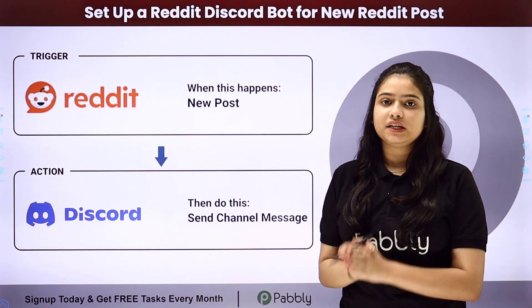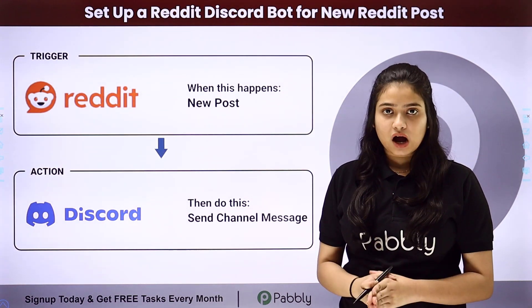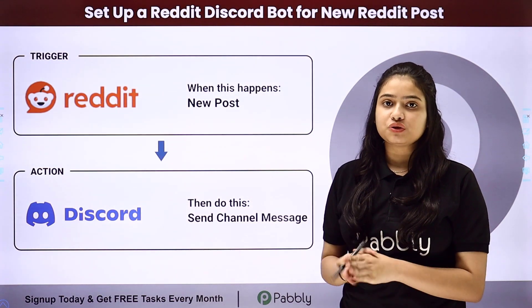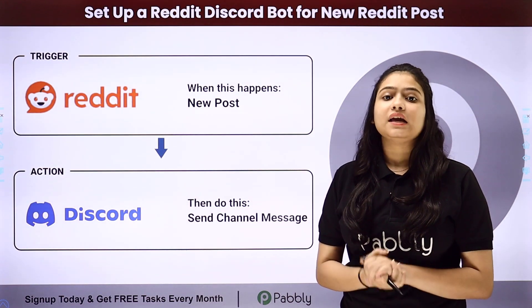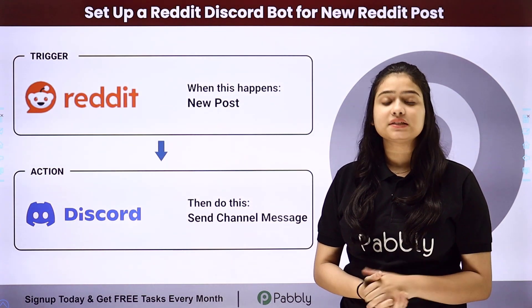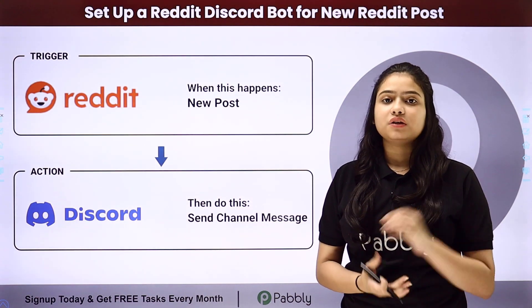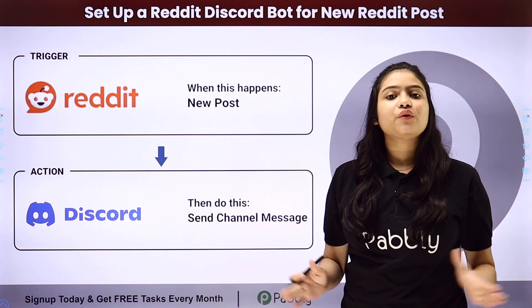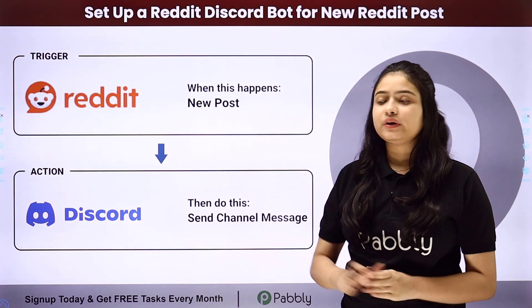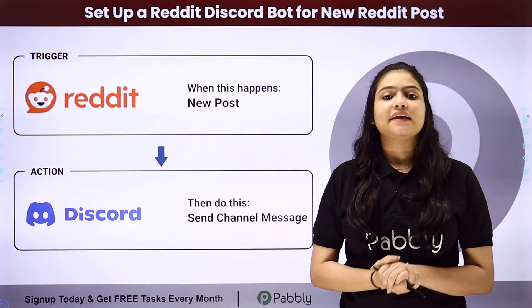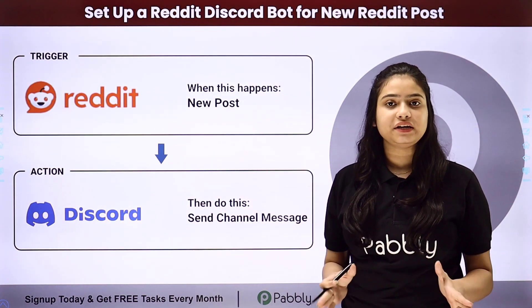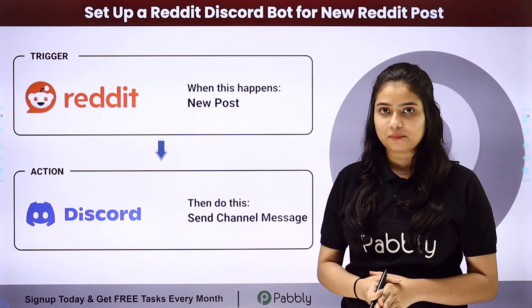Suppose you are having a community on your Reddit account and you want that as soon as you create a new post on your community, automatically a message should be sent on your Discord channel to your team members informing about the details of the post. To automate this entire process, we will have to integrate both these applications using Pabbly Connect.